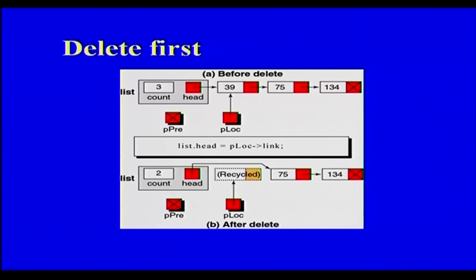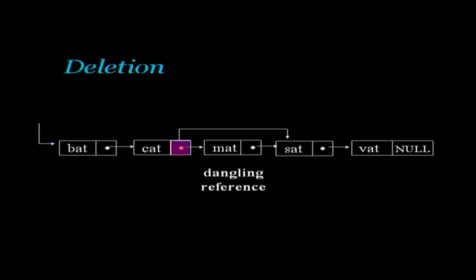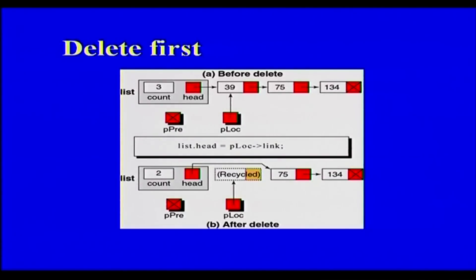Now let us look at deletion. You can delete the first node. The head node points to the list. To delete the first node — say 39 — you make the head pointer point to the next node, and change the count to 2. The location containing 39 can be recycled or returned to a store of available nodes. When you delete a node by changing the link so nothing points to it, this is also called a dangling reference.